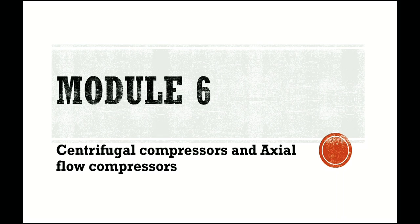Moving on to the sixth module, which comprises centrifugal compressors and axial flow compressors. In centrifugal compressors, we have to learn the working with velocity diagram, work done, power required, width of impeller and diffuser, isentropic efficiency, slip factor, power coefficient, surging and choking. In axial flow compressors, we need to learn the working, velocity diagram, degree of reaction, performance, roots blower, vane compressor, and screw compressor.